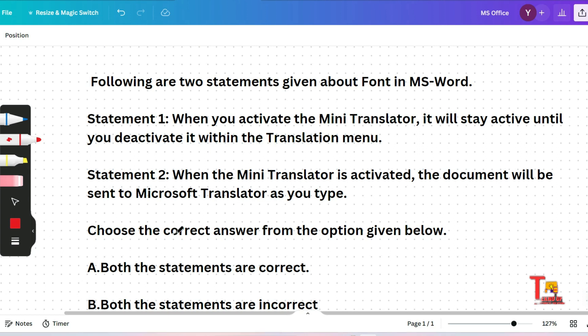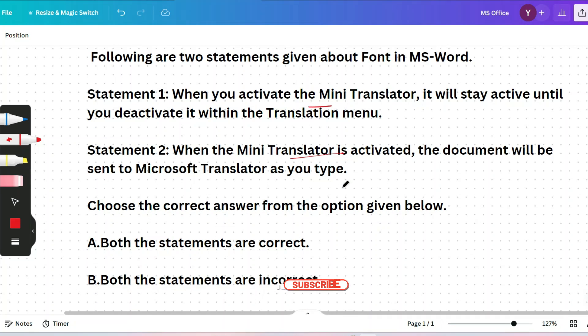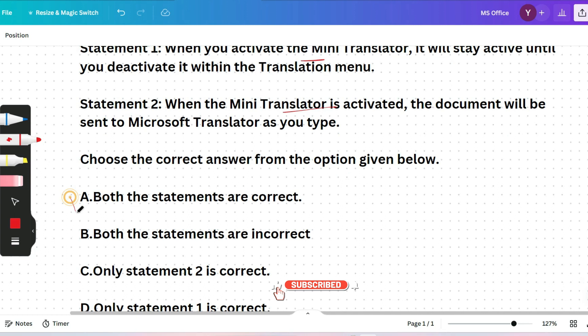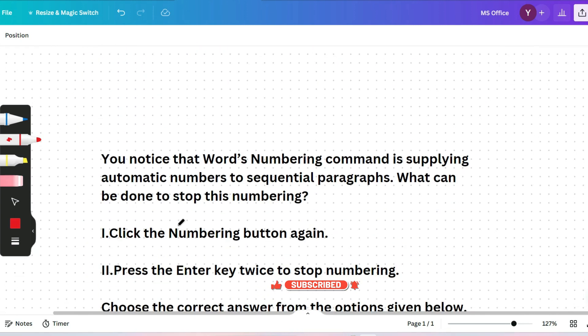Let me answer it. When you activate the mini translator, it will stay active until you deactivate it within the translator menu. This option is correct. And statement two is also correct: when the mini translator is activated, the document will be sent to Microsoft Translator as you type. The correct answer will be option A, both statements are correct.